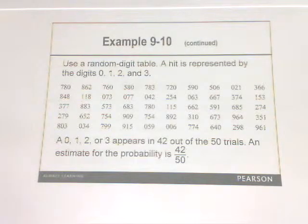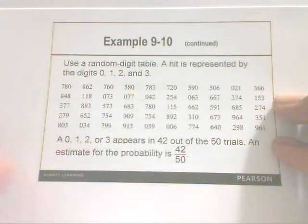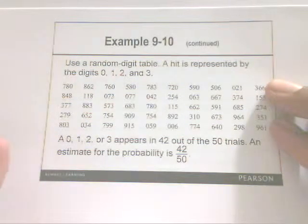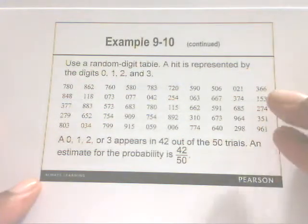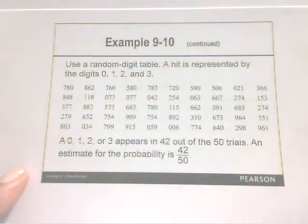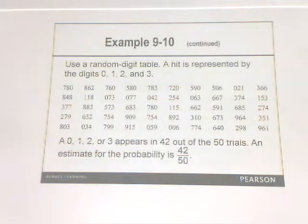So here, if you were to look at this random digit table that you see here, a 0, a 1, a 2, or a 3 appears in this particular situation 42 out of 50 trials. So an estimate for that probability would be 42 over 50.